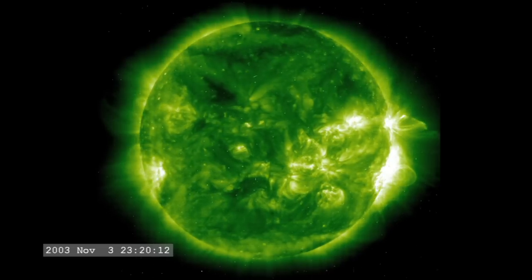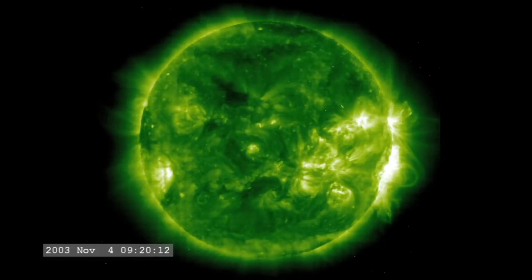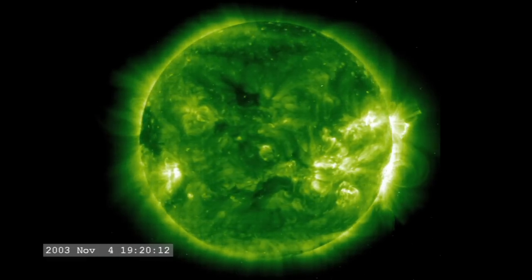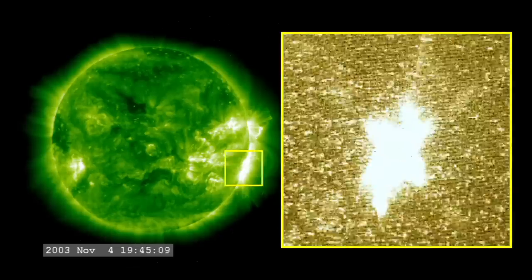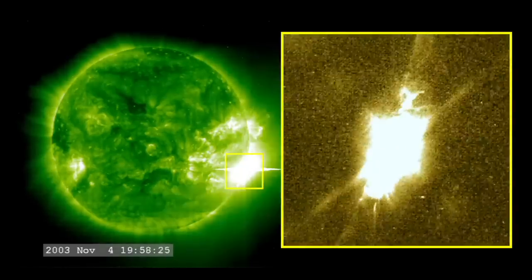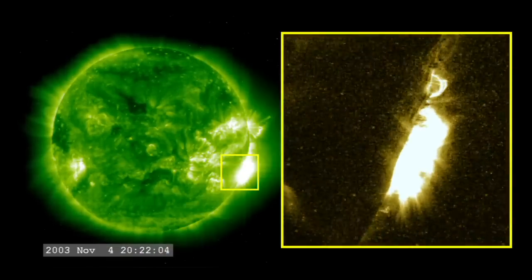The most powerful flare on record was in 2003, during the last solar maximum. It was so powerful that it overloaded the sensors measuring it. They cut out at X-17, and the flare was later estimated to be about X-45.